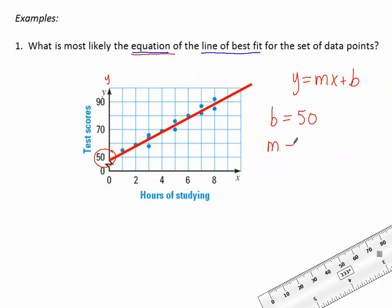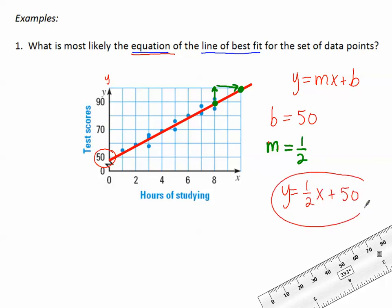I also need m, the slope. For the slope, I want to look at two points that are on this line — not random points above or below, but points actually on the line. Approximately where it's crossing through, I can identify two points, and from those two points the slope looks like 1 over 2. So my slope is approximately one half. Taking b and m and putting it into y equals mx plus b: y equals one-half x plus 50. That is the equation of the line of best fit for this set of data points.